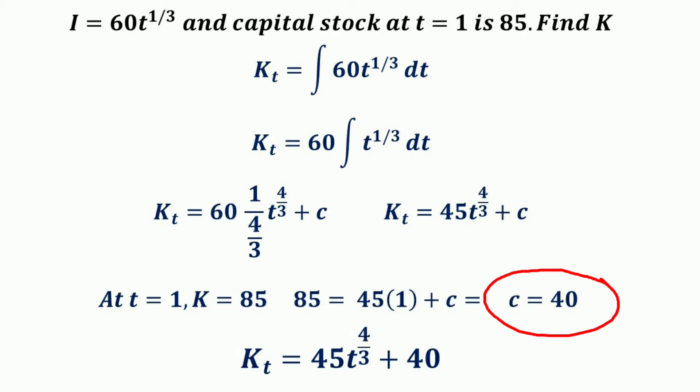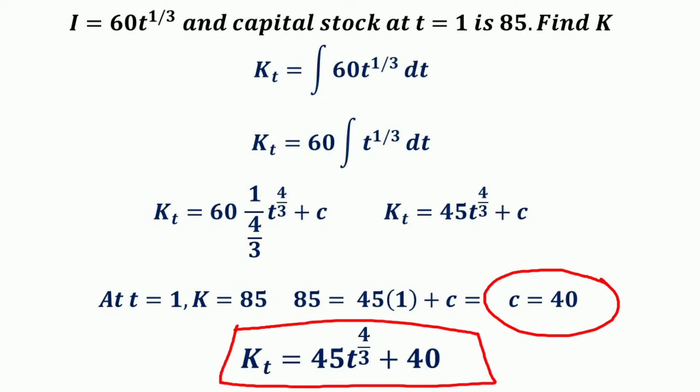Substituting C = 40, the capital stock function is K(t) = 45t^(4/3) + 40.